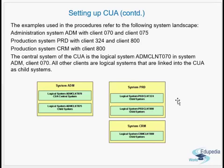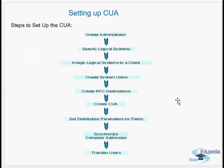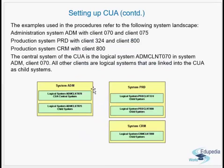Logical systems need to be created because user master records are client-dependent. In ADM, client 070 is chosen as the central system; client 075 will be the child system. The 070 user master records themselves also work as a child system internally. Even though the system has two clients, one client works as the CUA and the other is a child system. All remaining clients — the three other clients — are obviously child systems.